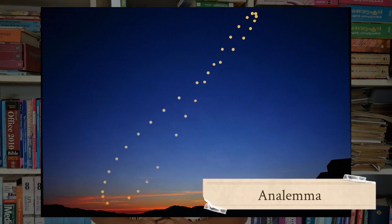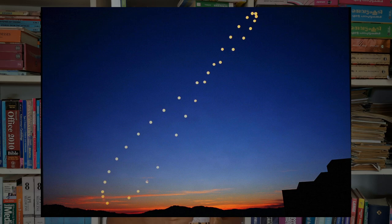You'll notice that the sun moves in the figure of an 8. Why is this so? Because we are taking a photo of the sun at the same time, you'd think that the sun will be at the same location in the sky throughout the year. But that is not the case.